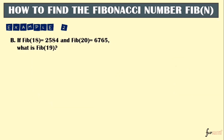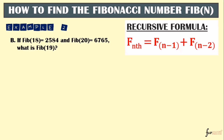Let's have another example. Fib(18) = 2,584 and Fib(20) = 6,765. The missing is Fib(19). Using the recursive formula, we use the higher n value, which is 20. So F20 is our formula term: F20 = F(20-1) + F(20-2).